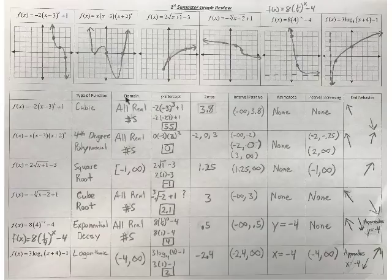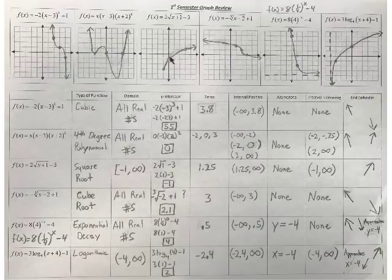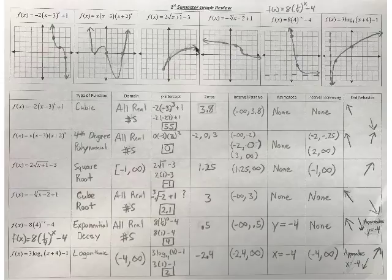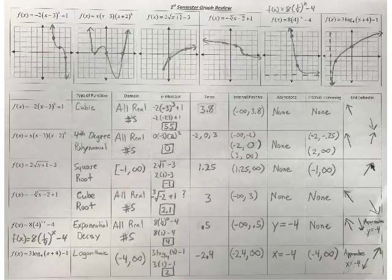Next, a square root graph. Our domain is from that dot to the right, so from negative 1, including negative 1 — the bracket is important. Plug in 0 to get my y-intercept: I get 1 inside and I get negative 1 — there it is. My zero looks like about 1.25. My interval positive would be from that zero to the right, not including the zero. No asymptotes. The whole graph is increasing from negative 1 to infinity. There is no left end behavior, but on the right you're going up, just very slowly.